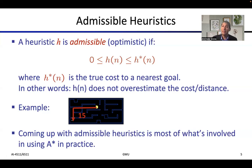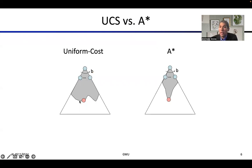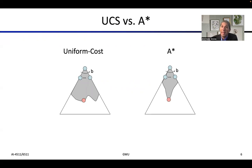Coming up with admissible heuristics is what's actually involved when using A* in practice. Comparing UCS versus A*: UCS searches uniformly since it has no heuristic, expanding evenly in all directions until it finds the goal. A* tries to estimate which node is closer, giving it preferential treatment by ordering nodes by the sum of backward cost plus forward cost (heuristic), so it finds the goal faster in general.